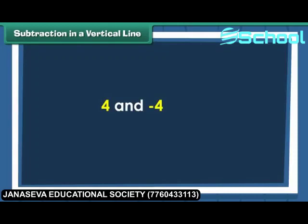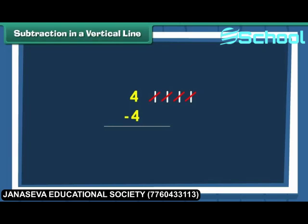Let us find four minus four. Draw four vertical lines next to four. Cross out all the four vertical lines to subtract four. There are no vertical lines left. Therefore, four minus four is zero.